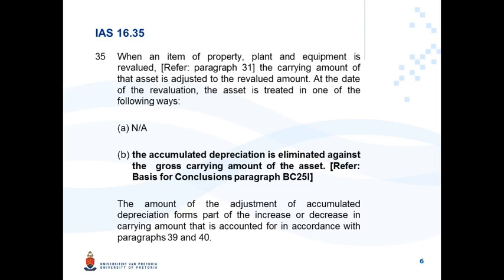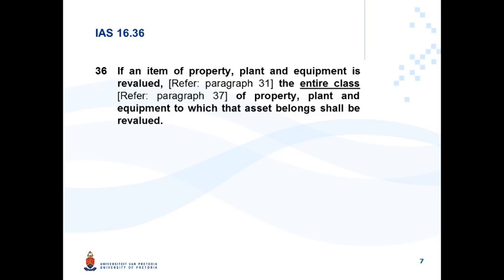Paragraph 35: when an item of PPE is revalued, the carrying amount of that asset is adjusted to the revalued amount. The asset is treated in one of the following ways — paragraph (b), which is applicable here: the accumulated depreciation on the asset is eliminated against the gross carrying amount of the asset. You write back the accumulated depreciation before revaluing. The amount of the adjustment forms part of the increase or decrease in the carrying amount accounted for in accordance with paragraphs 39 and 40.